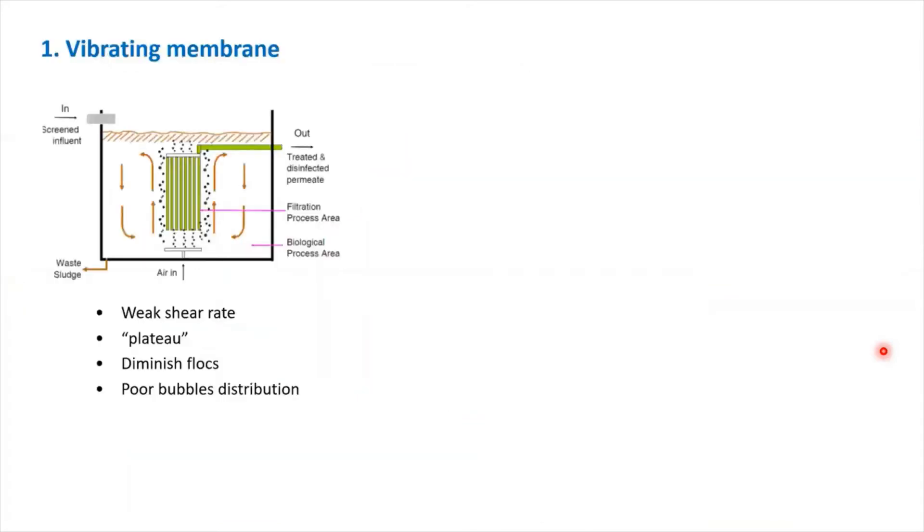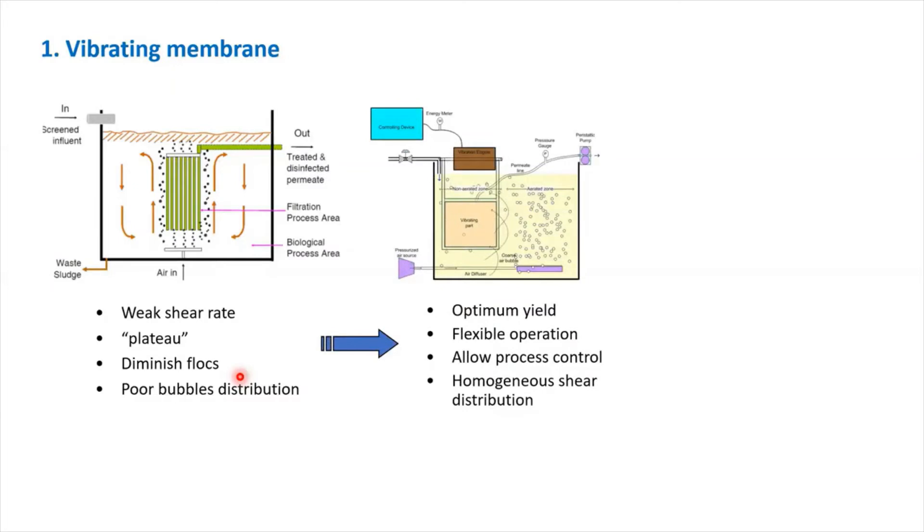The first approach is using vibrating membranes. This is part of my old study. Currently, people use coarse bubble aeration. When you use the aeration to scour off fouling, it has a few inherent limitations. Air bubbles only produce weak shear rate, which means that at one point, you cannot improve the permeability. By pumping air, you achieve some sort of cleaning. At one point, you cannot clean anymore. In the context of MBRs, it might also alter the feed condition. As such, it becomes fouling prone. And then you have problems with bubble distribution.